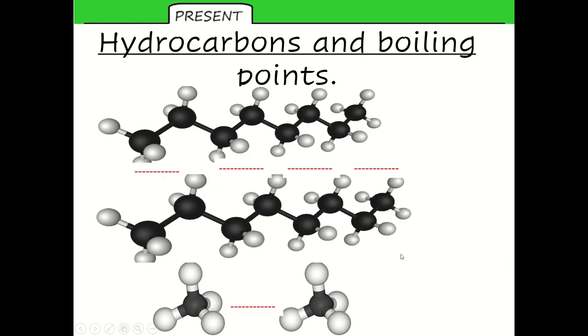So just a quick recap. Last lesson we said that crude oil is a mixture and it's a mixture of compounds called hydrocarbons. I'm showing you a couple of diagrams of some hydrocarbons, and each different type of hydrocarbon has a different boiling point. Longer hydrocarbons like these two at the top have got higher boiling points than shorter ones like these two at the bottom.